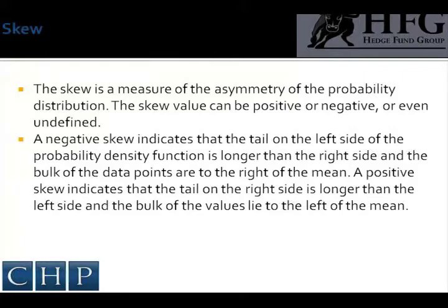When examining probability distributions, the tails associated with a data series is called the skew. The skew is a measure of the asymmetry of a probability distribution — how a distribution is not normal. The skew value can be positive or negative. A negative skew indicates that the tail on the left side of a probability density function is longer than the right side, and the bulk of the data points are to the right of the mean.